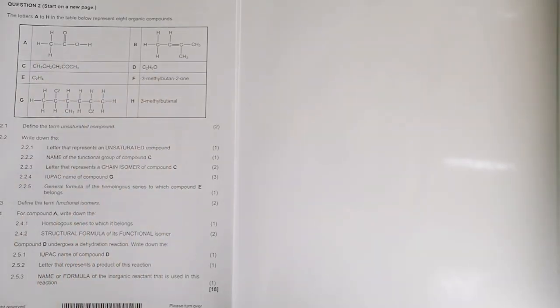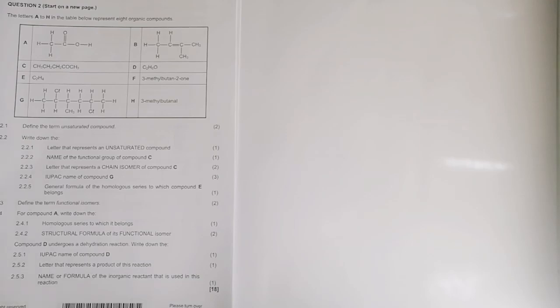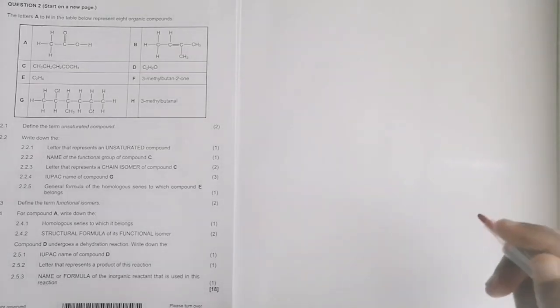Let's get right into it. We've been given all of these organic compounds — from A, B, C, D through to H. The first thing they ask is: define the term 'unsaturated compounds.' In organic chemistry, remember that these are hydrocarbons that have either a double bond or a triple bond, or you can say they do not have the maximum number of hydrogens around each carbon. If you have another definition, please put it in the comments so we can all benefit.